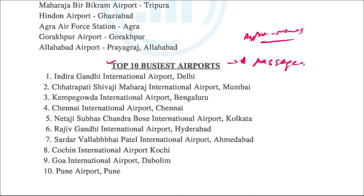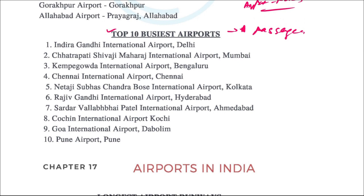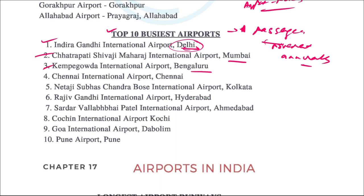Now we'll move on to the top 10 busiest airports. These airports are categorized as busiest based on annual passenger movement. They can ask which is the busiest airport in India, or the second or third highest. The most busiest is Indira Gandhi International Airport, Delhi. Second is Mumbai Airport, which is Chhatrapati Shivaji Airport. Third is Bangalore's Kempegowda International Airport.